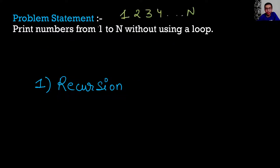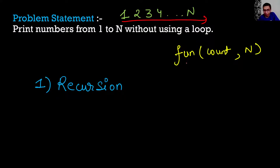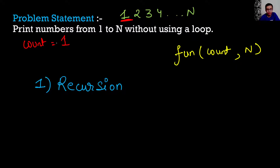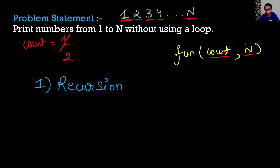To print N numbers using recursion, I'll create a function called fun having two arguments: count and n. The purpose of the variable count is to print the current element. Count would initially be 1, so we'd print 1, then change count to 2 and print 2, then 3, then 4, and so on till N. So count tracks the current element and N tells us where to stop.